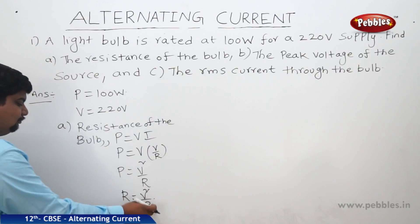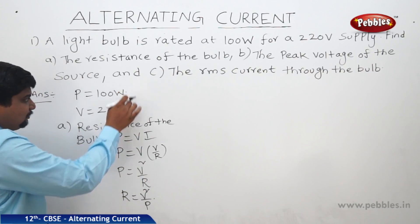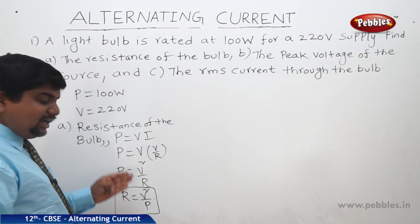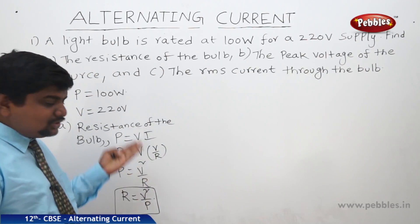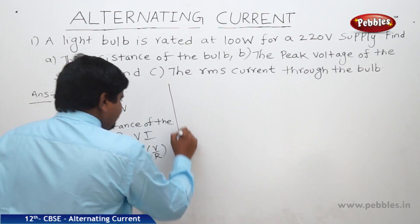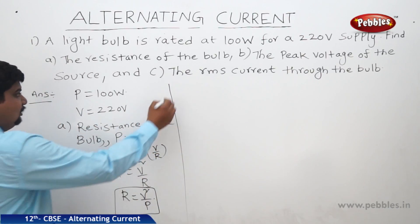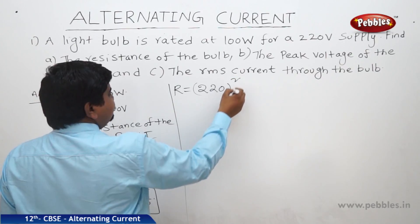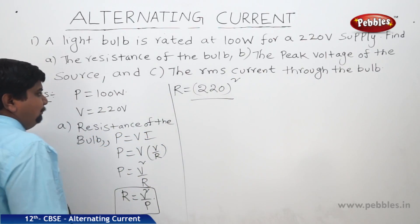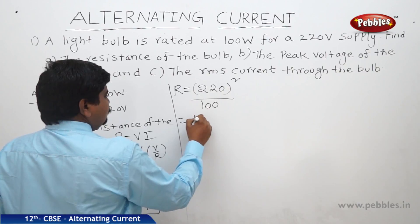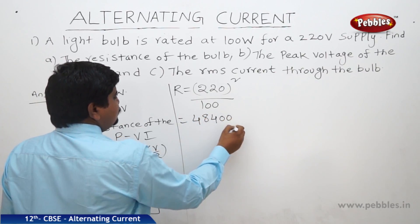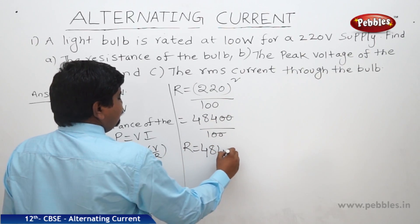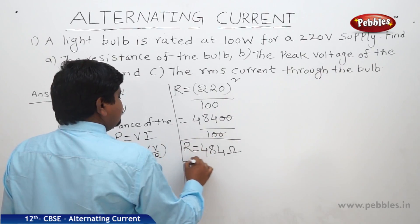We have V = 220 volts and P = 100 watts. Substituting these values: R = 220² / 100 = 48400 / 100. Therefore R = 484 ohms. The first part is complete.